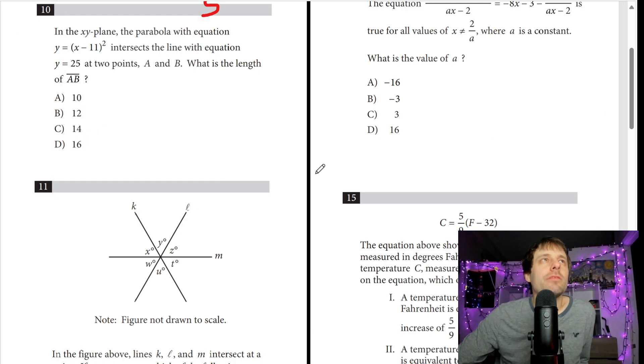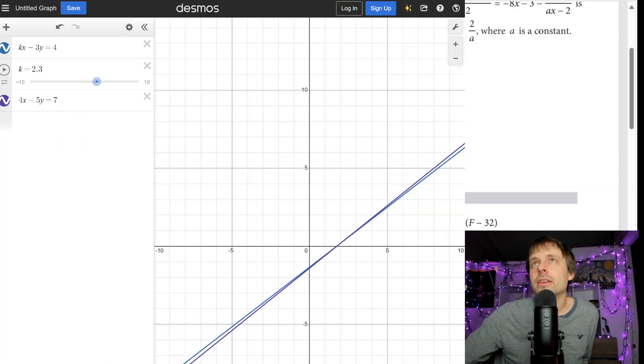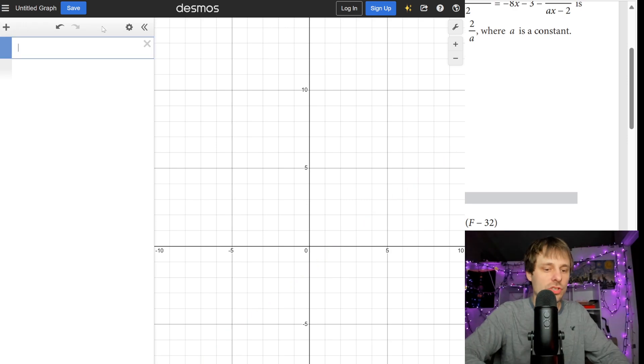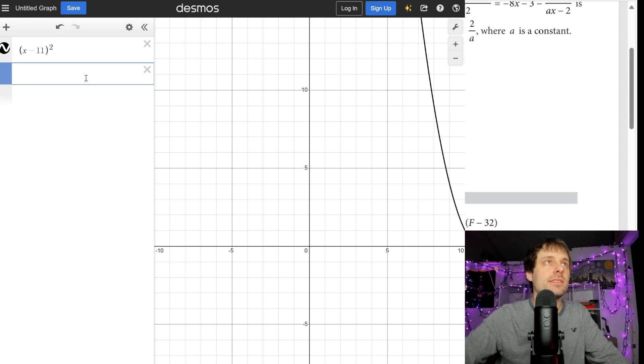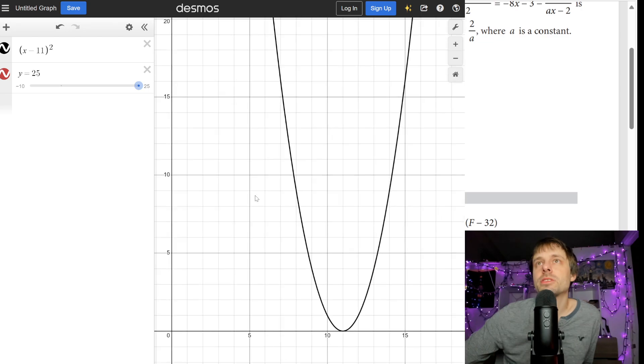But let's try number 10 here. We have a parabola intersects a line at y equals 25. That's easy. I'm going to pull up Desmos. Let's grab Desmos and check this problem out. So first function, x minus 11 to the second in parentheses. Second equation, y equals 25.